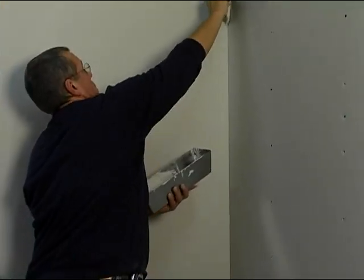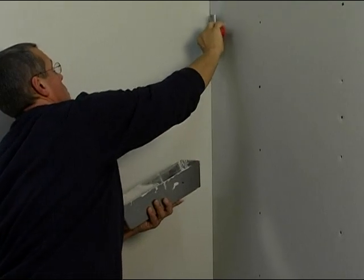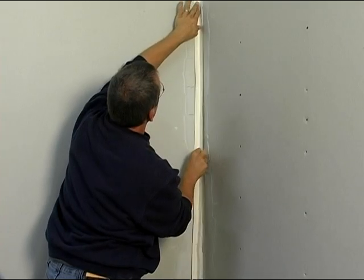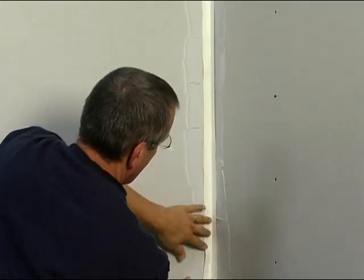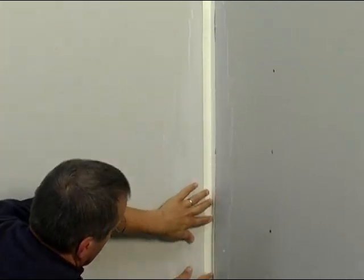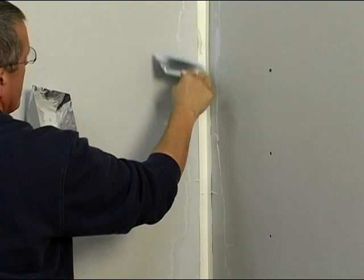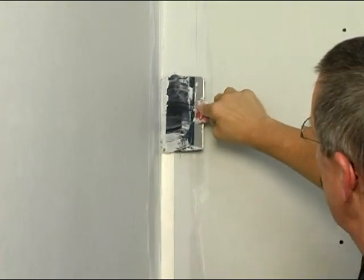Now let's take a closer look at taping techniques for corners. Inside corners can be a little challenging. Apply a thin layer of mud inside the seam and on both sides of the corner. Measure and cut the length of tape needed, fold it in half lengthwise, and press it into the corner. Run the knife down each side of the corner to set the tape in the mud, then coat both sides of the corner with a thin layer of mud.